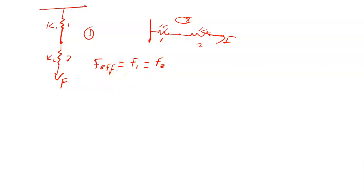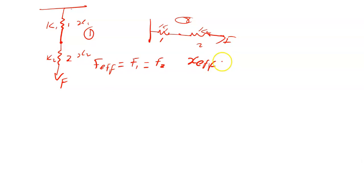What can you say about the extension? We cannot assume the extension is the same for both springs, because that would only be the case if the spring constants are the same. Since spring 1 extends by x1 and spring 2 extends by x2, the effective or total extension is x1 plus x2 — the extension of the first spring plus the extension of the second spring.